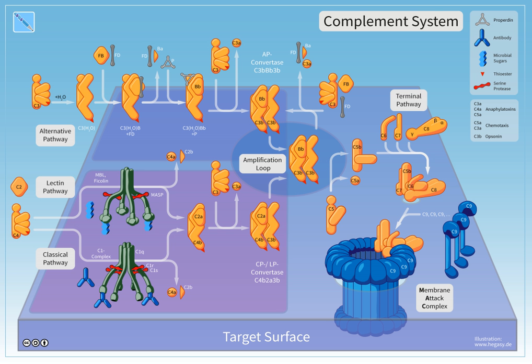The complement system has the potential to be extremely damaging to host tissues, meaning its activation must be tightly regulated. The complement system is regulated by complement control proteins, which are present at a higher concentration in the blood plasma than the complement proteins themselves. Some complement control proteins are present on the membranes of self-cells preventing them from being targeted by complement.